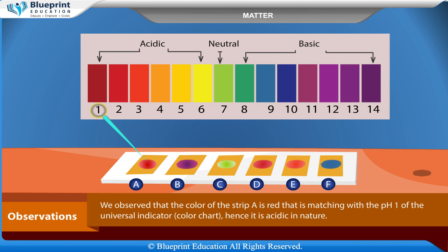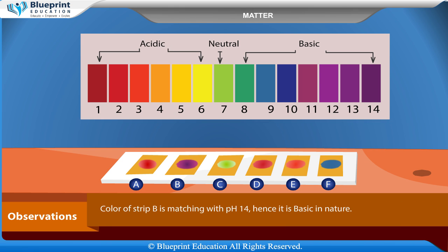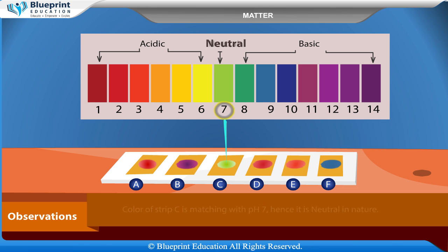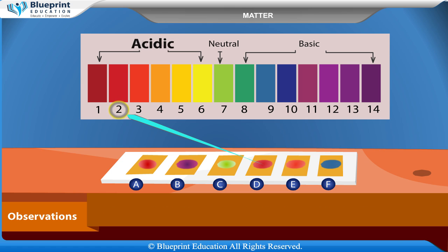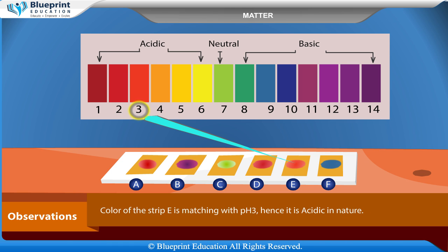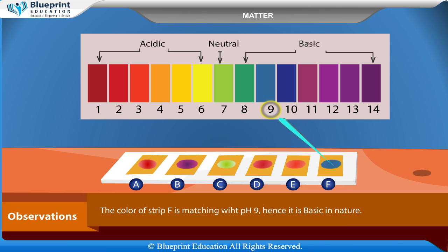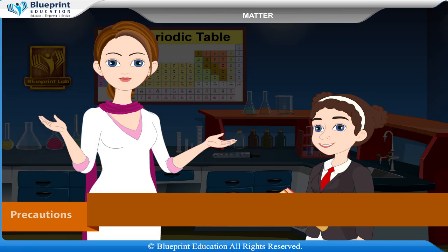Observations: The color of strip A is red, matching pH 1 on the universal indicator color chart — hence it is acidic in nature. The color of strip B matches pH 14 — hence it is basic in nature. The color of strip C matches pH 7 — hence it is neutral in nature. The color of strip D matches pH 2 — hence it is acidic in nature. The color of strip E matches pH 3 — hence it is acidic in nature. The color of strip F matches pH 9 — hence it is basic in nature.